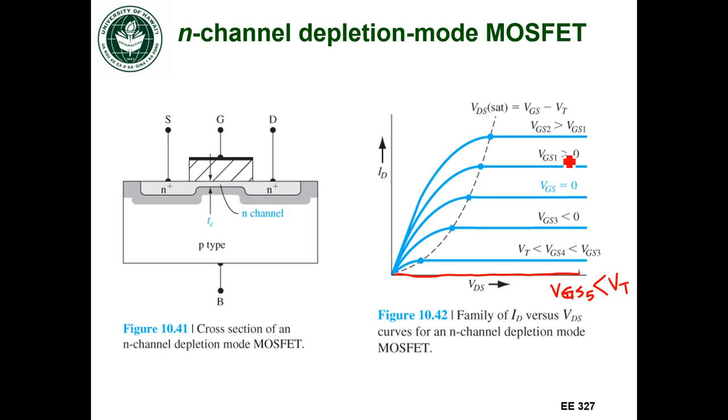If I then go to VGS is above zero, then I'll go higher to these curves that are higher drain current versus VDS.